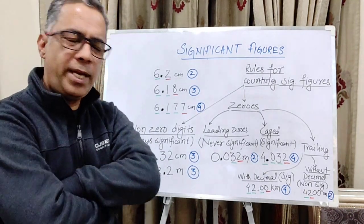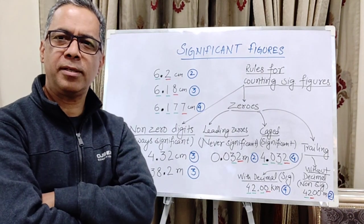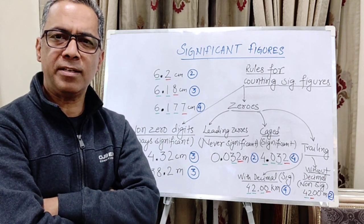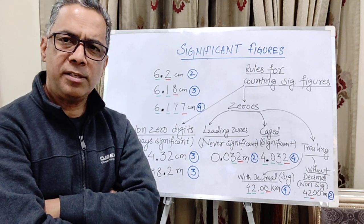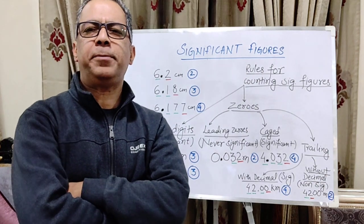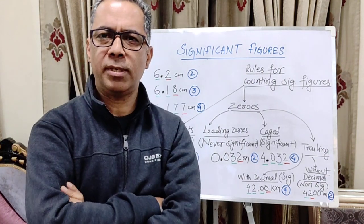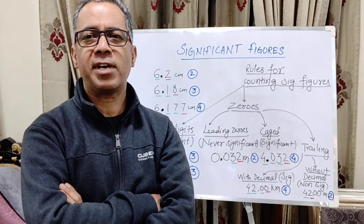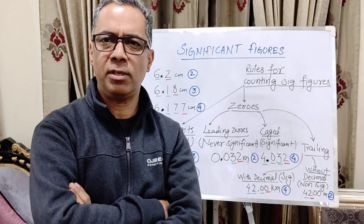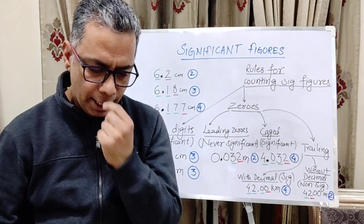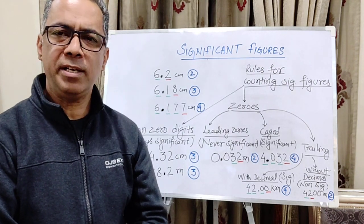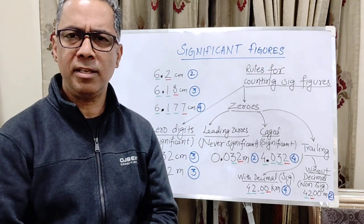Hello everyone. Today we're going to discuss the idea of significant figures or significant digits as it is used in science — in physics, in chemistry — and we'll be discussing the rules that are to be used for counting the number of significant digits in a reported measured value. In science, why we need this concept of significant figures, let's try and understand this first.